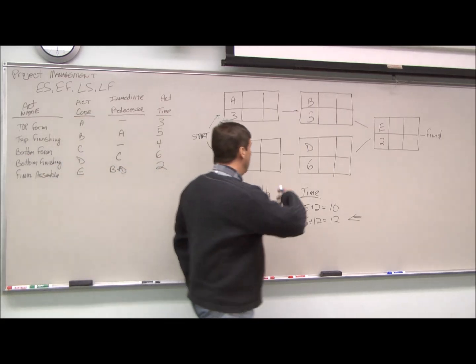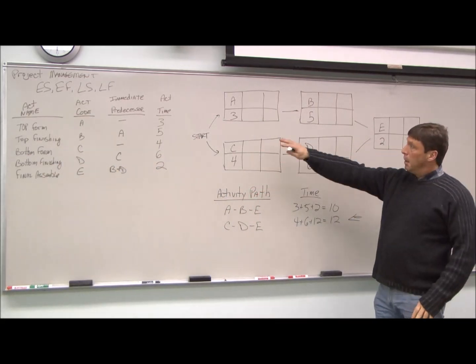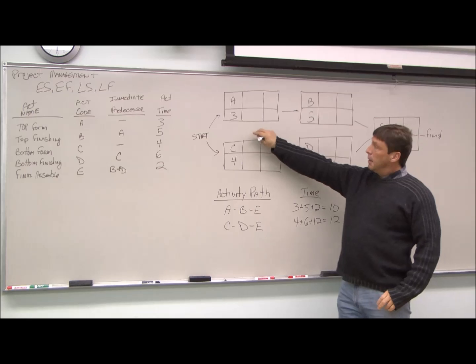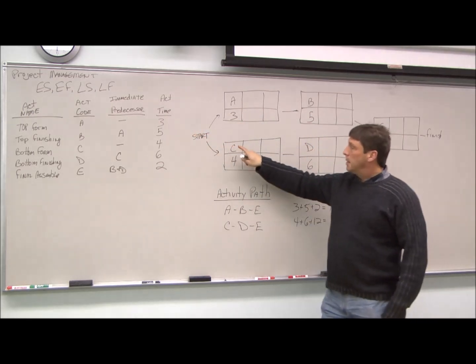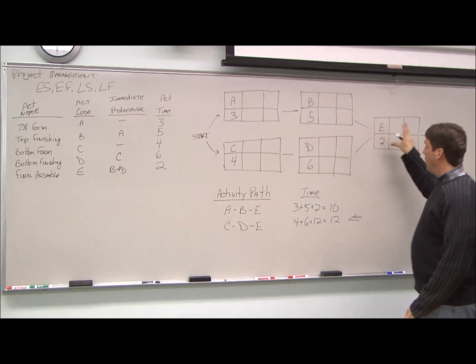So basically, I've plotted out, drawn the graph activity chart. A will take three weeks, C will take four, so on down the line.